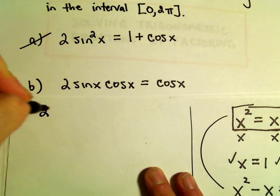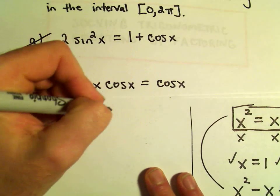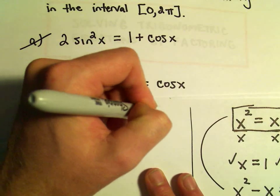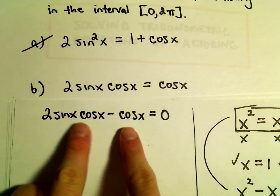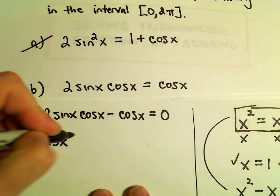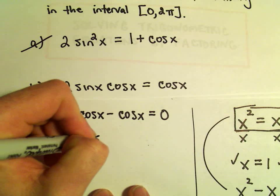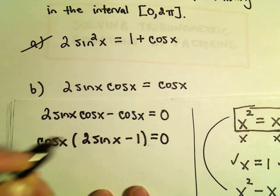We've got 2 sine x times cosine x. I'm going to subtract the cosine x over to the left side, so we'll have 0 on the right. Both terms have a cosine x, so I'm going to factor that out. We would be left with 2 sine x minus 1 equals 0.